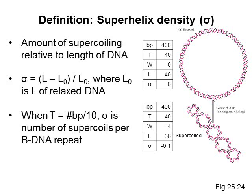DNA in living bacteria tends to have a superhelical density of around minus 0.06. DNA is generally negatively supercoiled in vivo. We'll see why when we talk about replication.